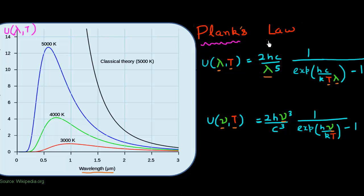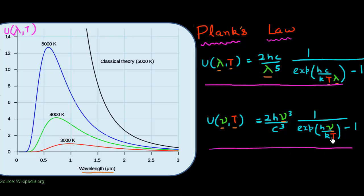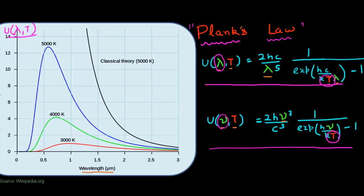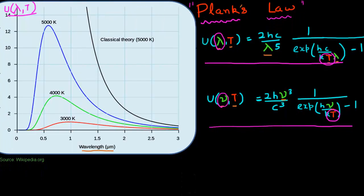We started talking about Planck's law in the last video, where I introduced the Planck's formula. This relates the spectral irradiance as a function of either frequency or wavelength, and in both cases it depends upon the temperature of the black body, which features in the exponential term. In this video I want to give you a simple derivation of Planck's law — with just a few simple equations, you can derive it.